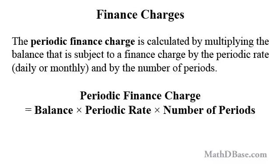The periodic finance charge is calculated by multiplying the balance that is subject to a finance charge by the periodic rate — daily or monthly — and by the number of periods.